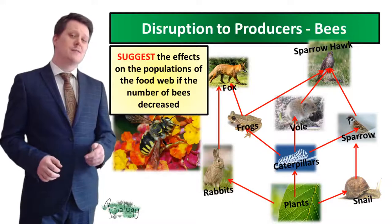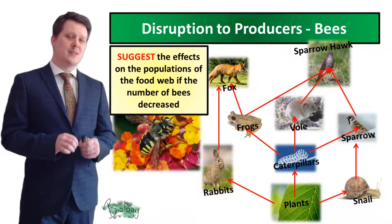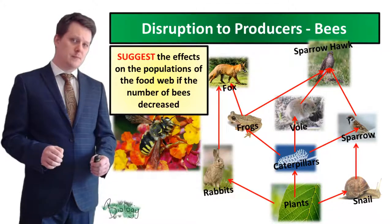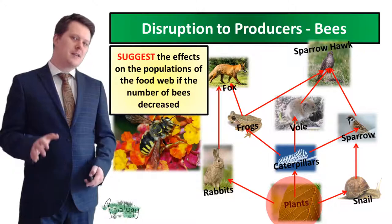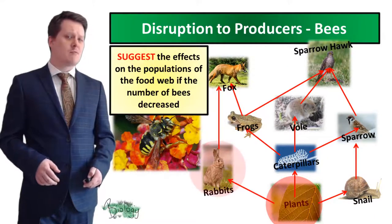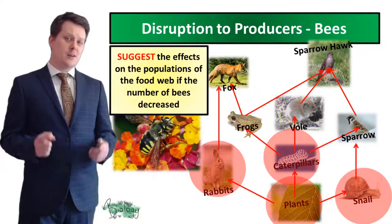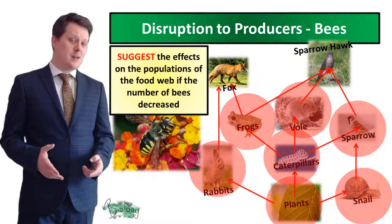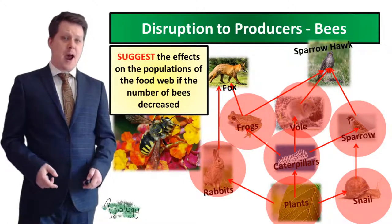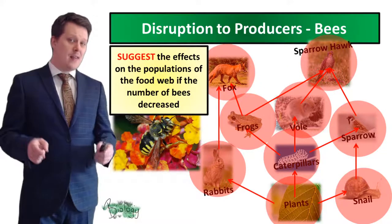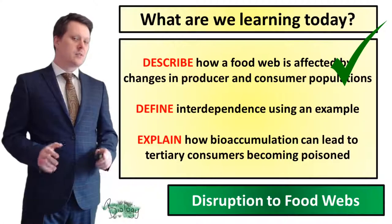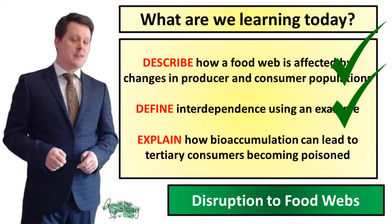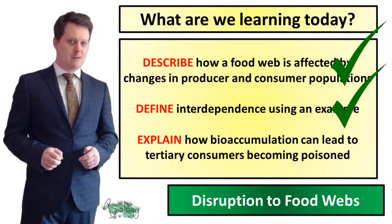A falling number of bees can lead to a decrease in the amount of producers being pollinated and reproduced. This leads to decreased numbers in plants, and if you decrease the number of plants, our rabbits, caterpillars and snails aren't going to have as much to eat so their numbers will go down. That means our frogs, voles and sparrows are going to have less to eat, so their numbers go down. And our fox and sparrowhawk are going to have less to eat, and their numbers are going to go down. So we've had a look at what interdependence is, using the example of how animals rely on each other for food and how it can be influenced by animals not in the food web.